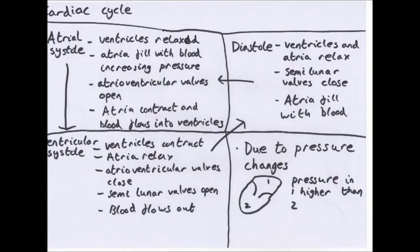The high pressure in the ventricles opens the semilunar valves, and blood is forced out into the pulmonary artery from the right ventricle and the aorta from the left ventricle. During diastole, both the ventricles and atria relax, increasing their volume and lowering pressure. The higher pressure in the pulmonary artery and aorta causes the semilunar valves to close, preventing backflow. The atria then fill again due to high pressure in the vena cava and pulmonary vein, and the cycle starts over.